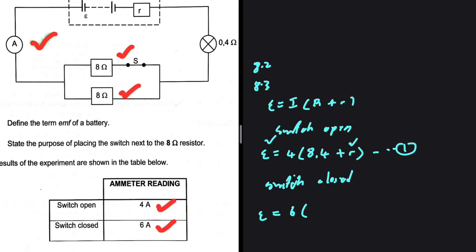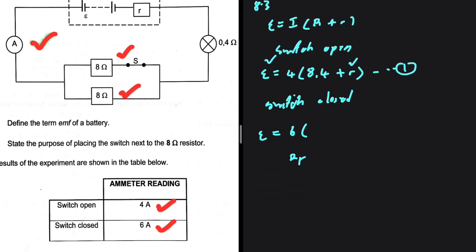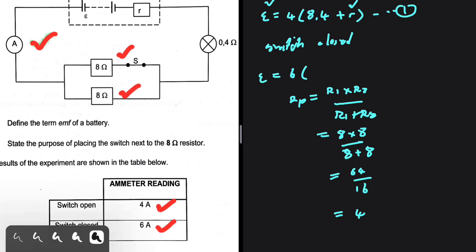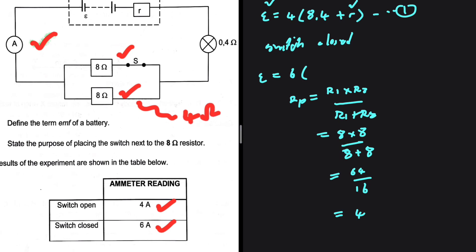We calculate the parallel resistance using Rp = (R1 × R2) / (R1 + R2). With R1 = R2 = 8 ohm: (8 × 8) / (8 + 8) = 64 / 16 = 4 ohm. So the effective parallel resistance is 4 ohm. Adding the 0.4 ohm resistor in series, our total external resistance is 4 + 0.4 = 4.4 ohm.